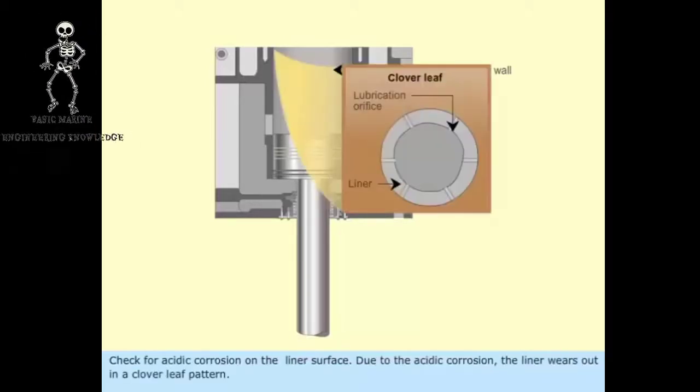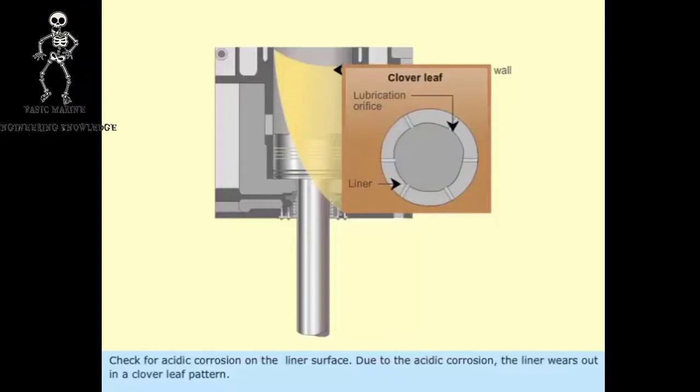Check for acidic corrosion on the liner surface. Due to the acidic corrosion, the liner wears out in a clover leaf pattern.